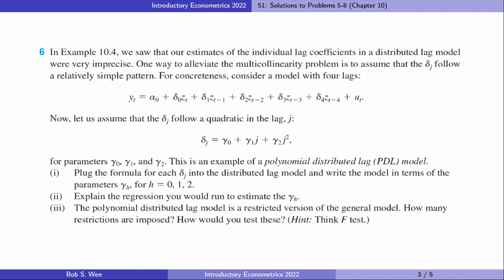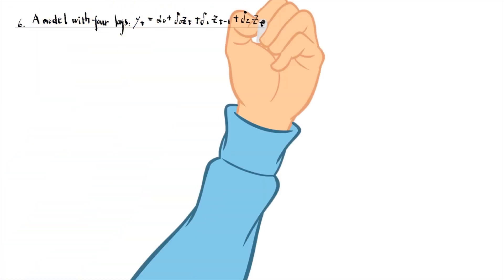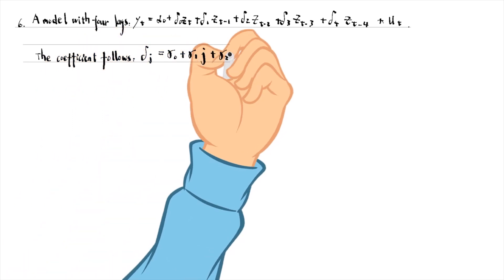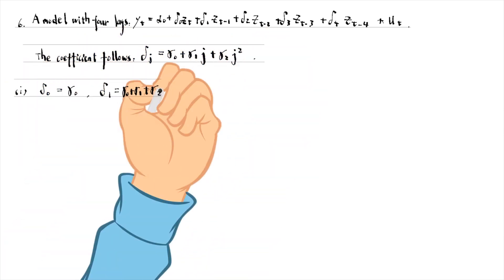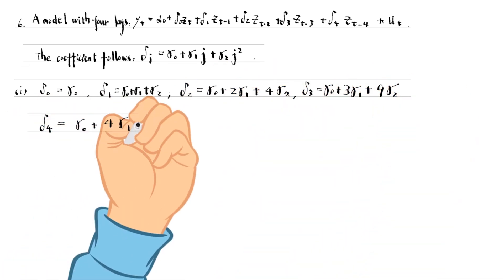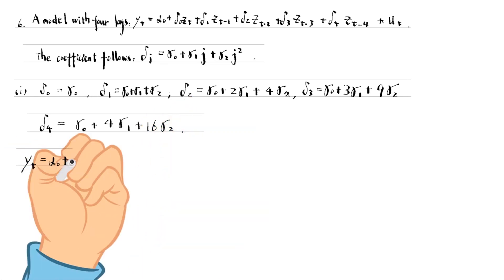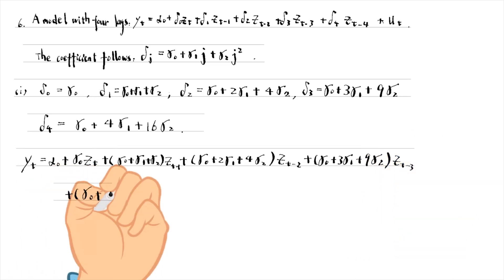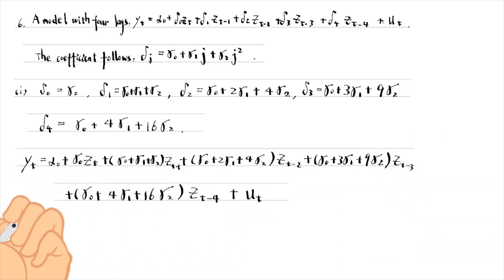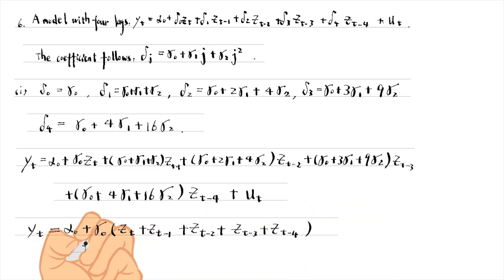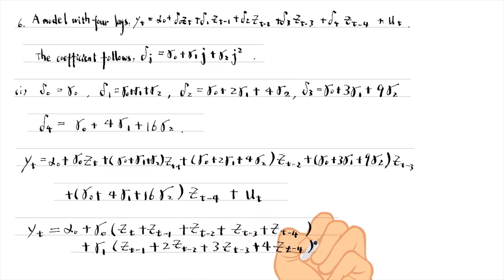Let's do problem 6. For part 1, we can write down the deltas as a function of gammas. Then we substitute for the deltas in the original model. Next, we rearrange the equation and write it in terms of the parameters gamma 0, gamma 1, and gamma 2.